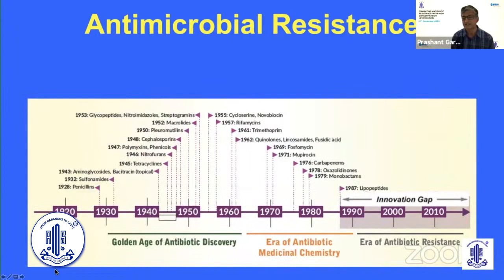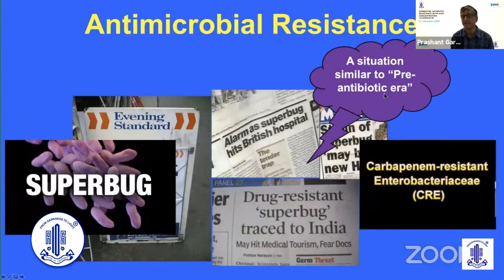Antibiotic resistance is no longer only a hospital-acquired phenomenon. It is originating in the community — not only through misuse of antibiotics in humans, but also in animal husbandry, poultry, and agriculture, as well as through unregulated disposal of pharmacological waste in water. The concern is that while we are entering an era of antibiotic resistance, we are seeing an innovation gap: no new antibiotics are being developed. There is a fear we will run out of options managing superbugs like methicillin-resistant Staph aureus and carbapenem-resistant Enterobacteriaceae.